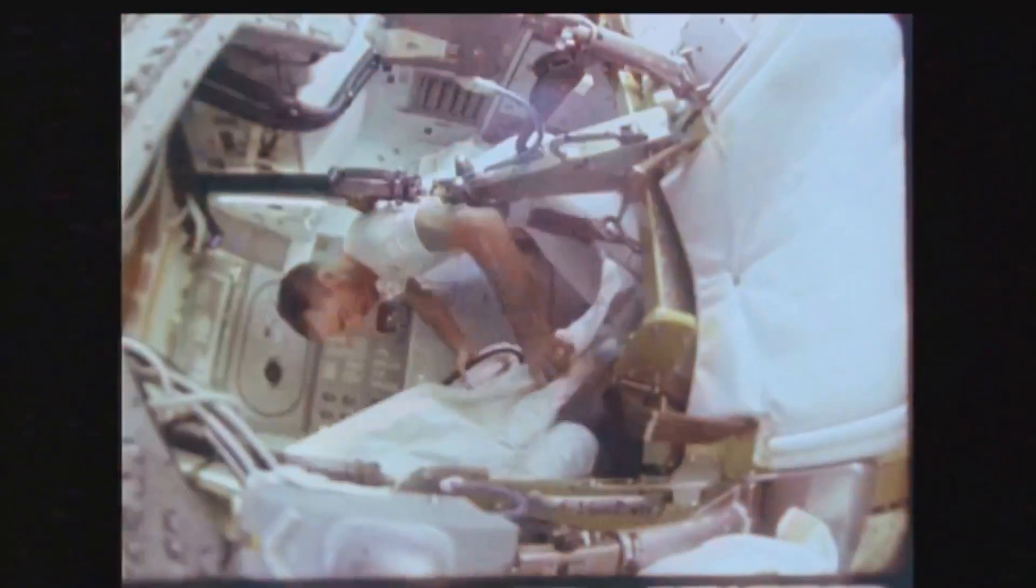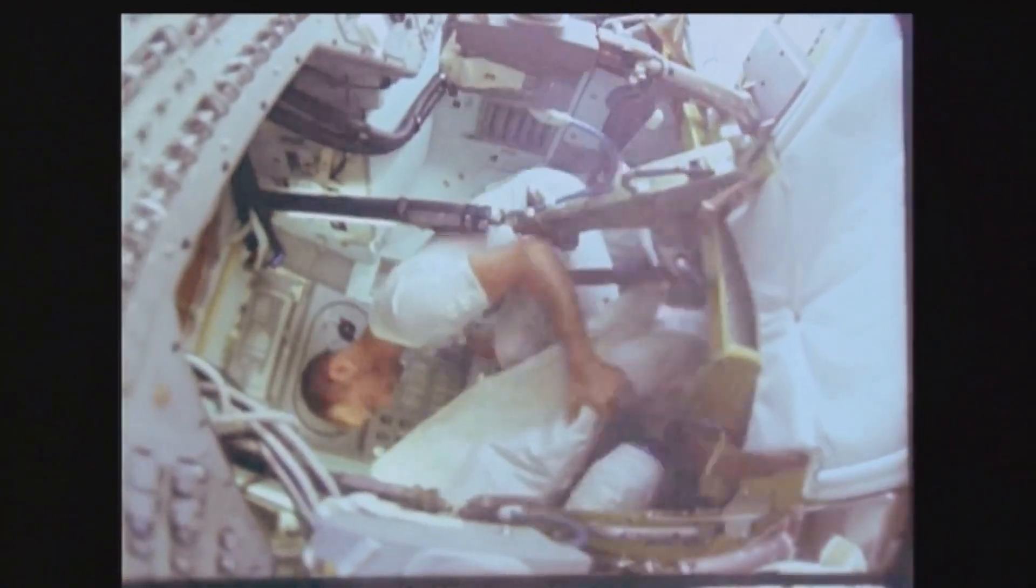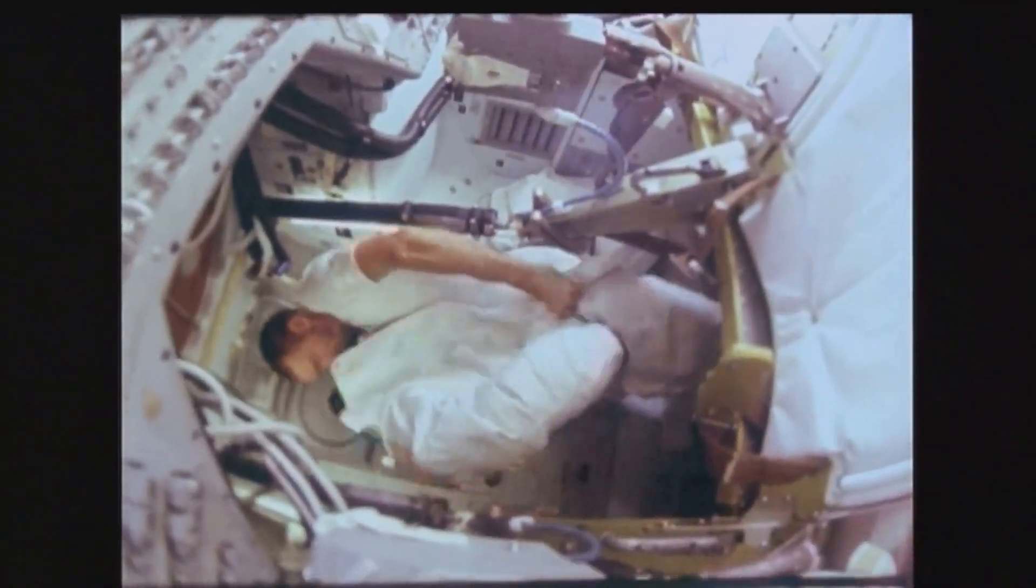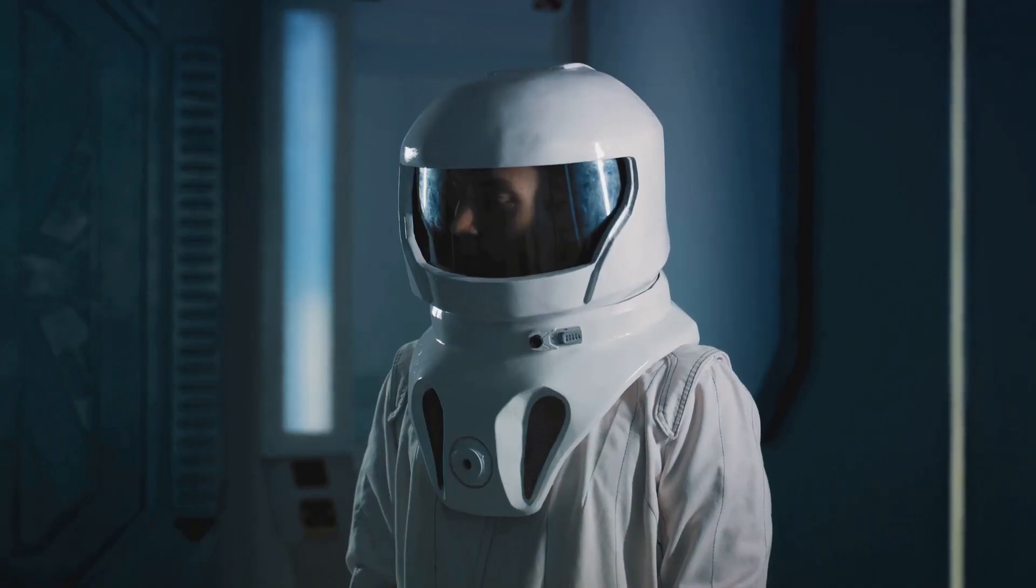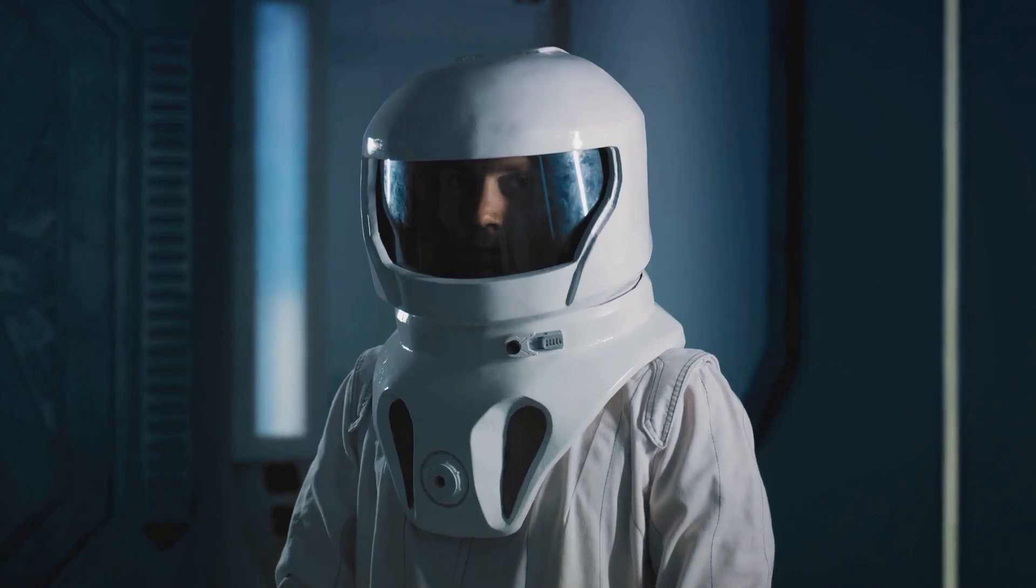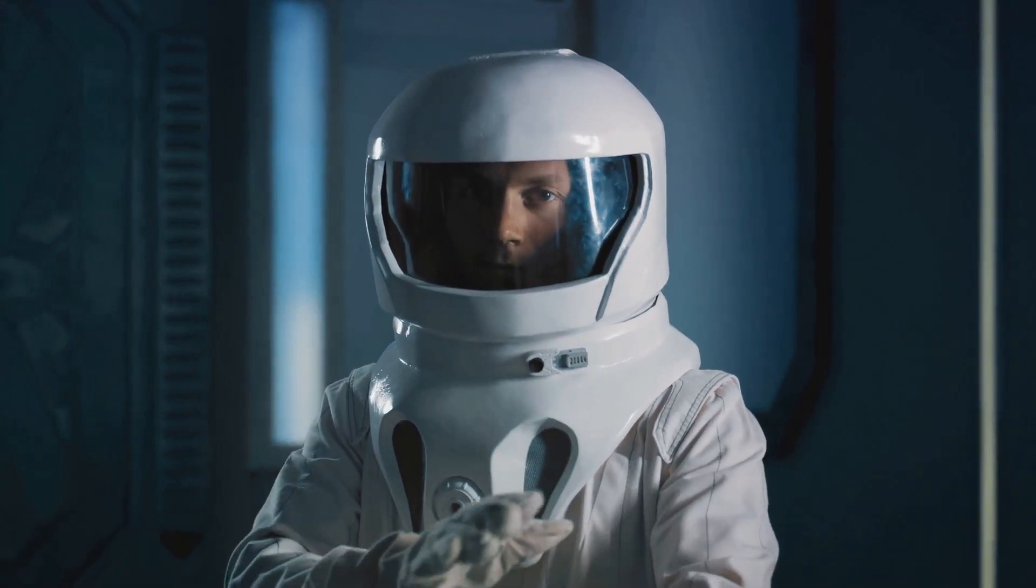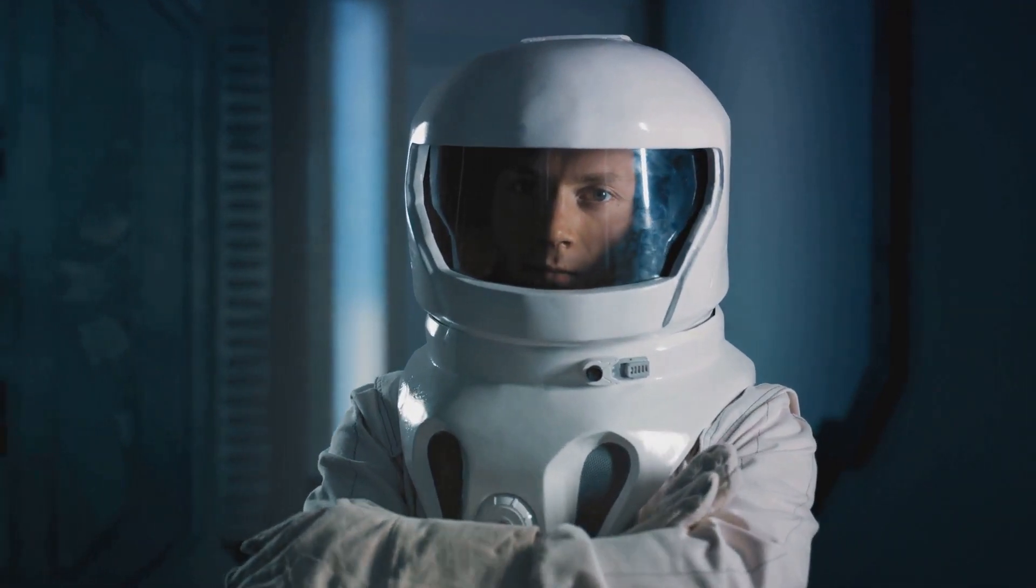This heavy atmosphere results in a crushing surface pressure. It's a bit like having a weight of almost a ton pressing down on you from every direction. Just for perspective, the pressure suits worn by astronauts on the International Space Station are designed to withstand only a fraction of this pressure. So, let's just say you'd need a pretty sturdy space suit to survive on Venus.